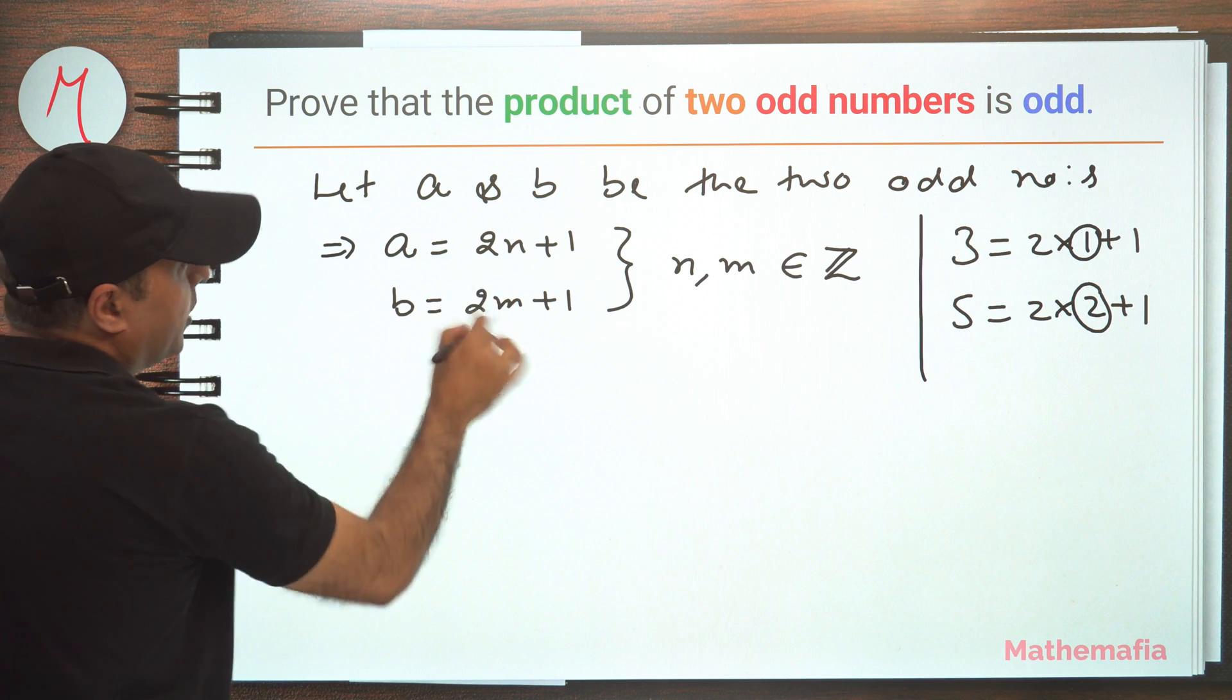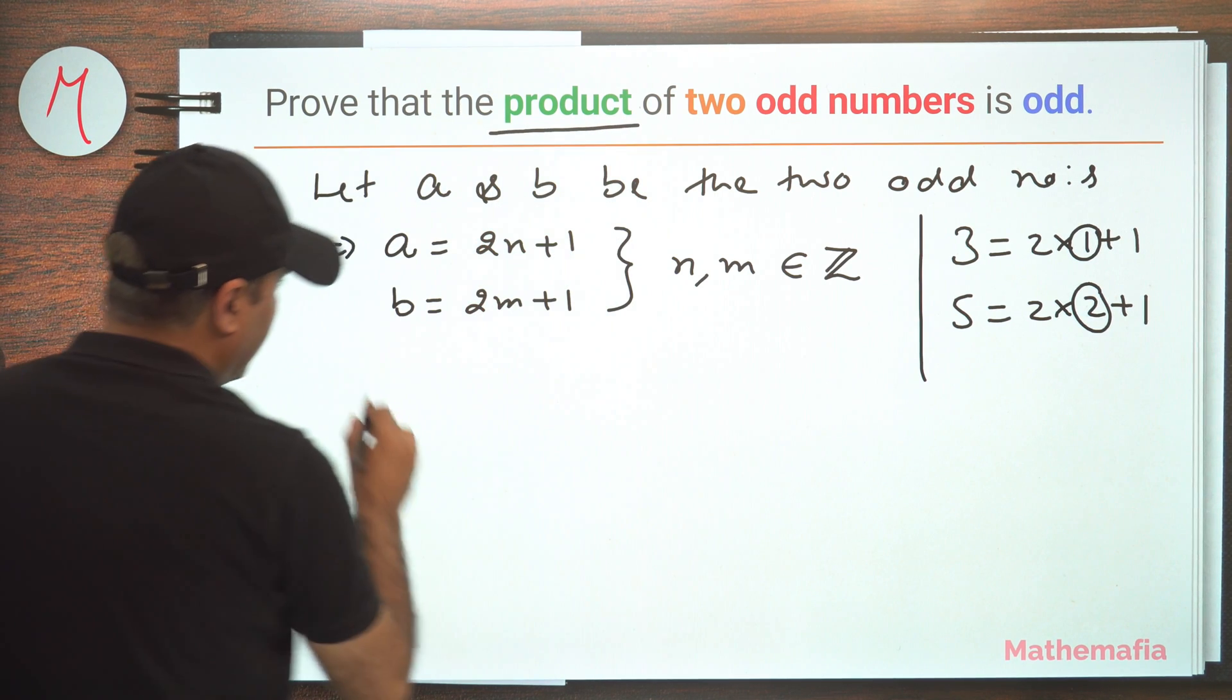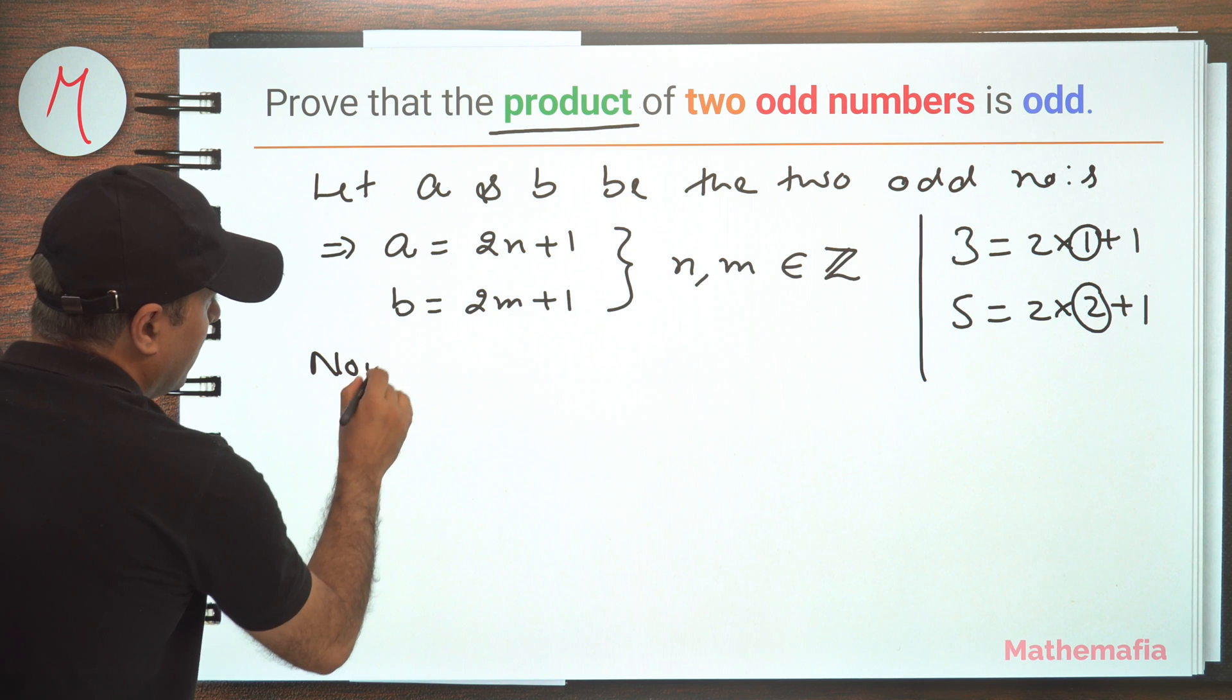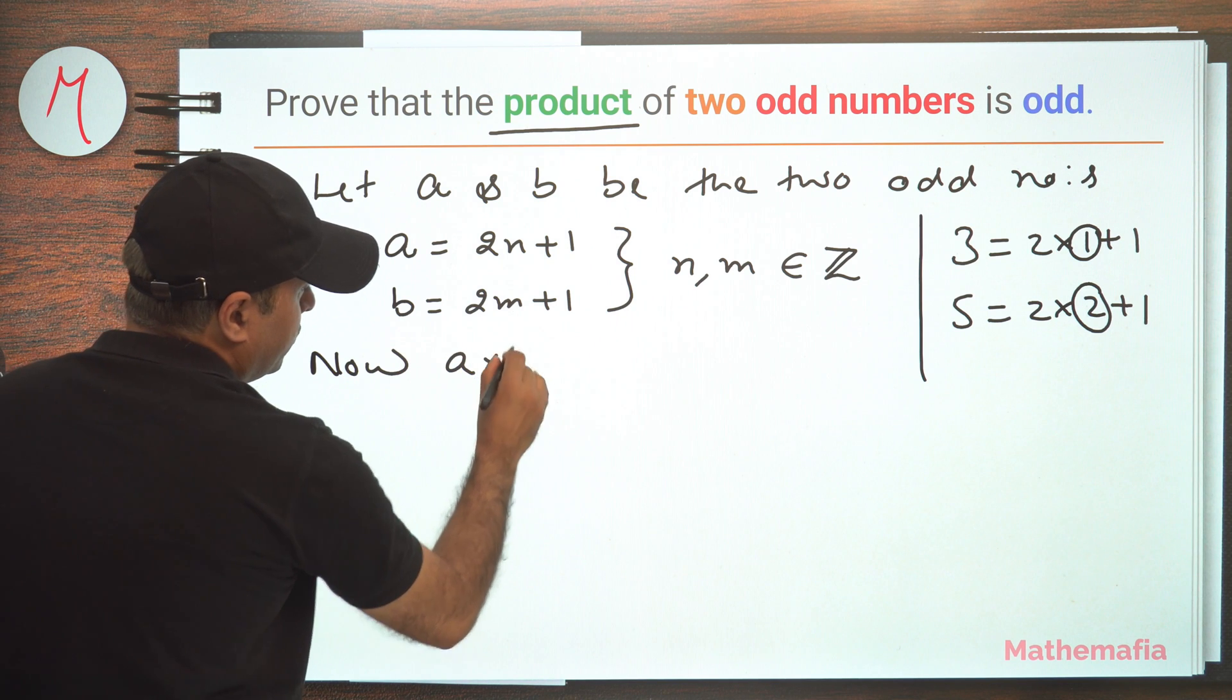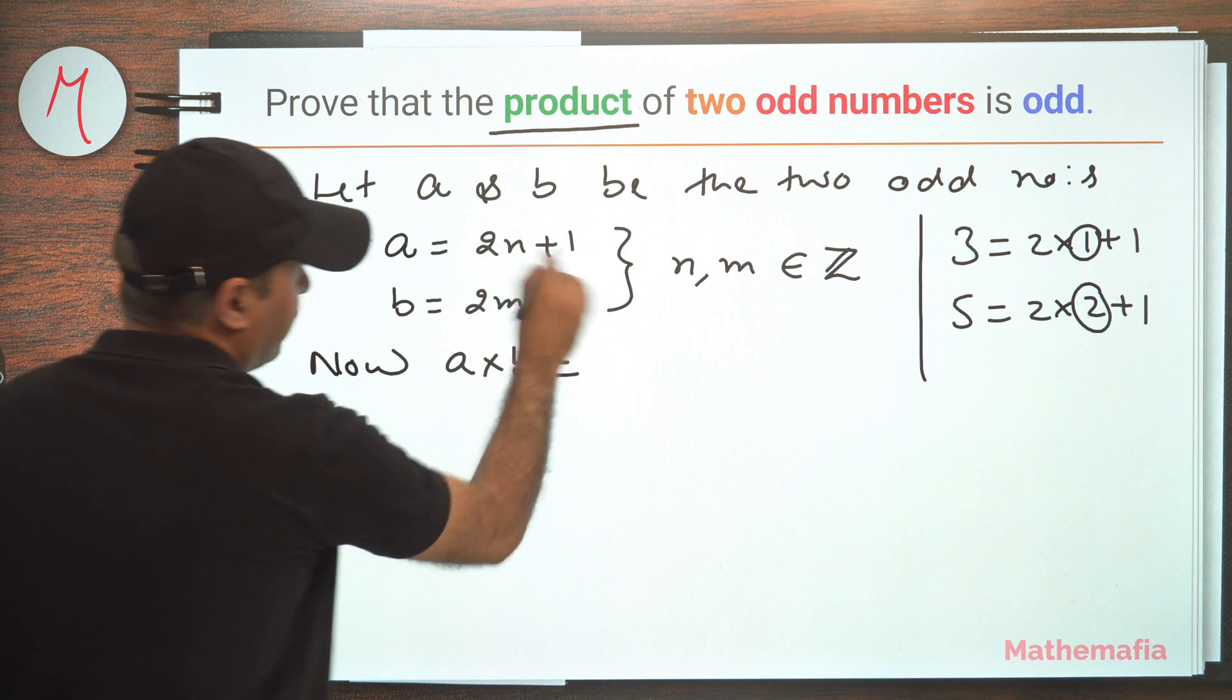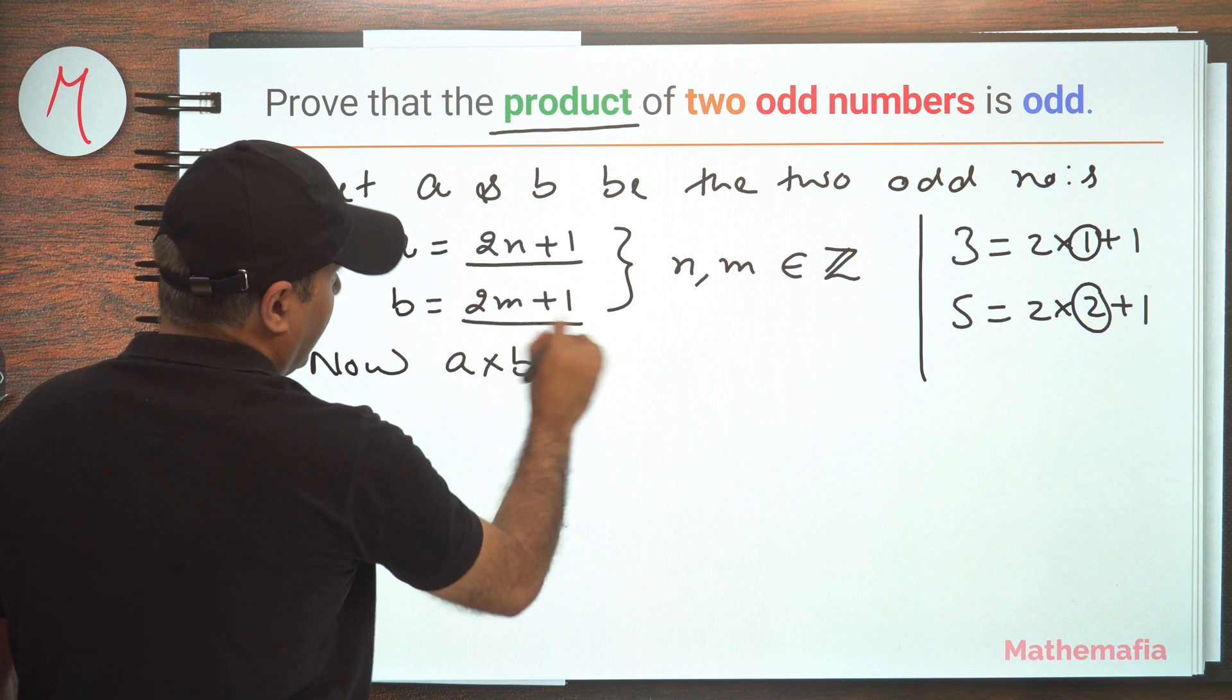Now let's multiply these two because we have to find the product. So a times b should be equal to - we have to multiply these two, right? Because this is a, this is b.